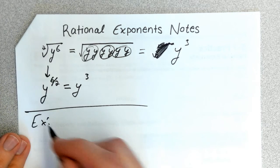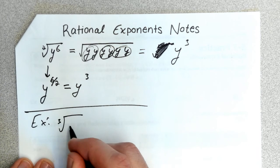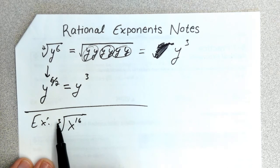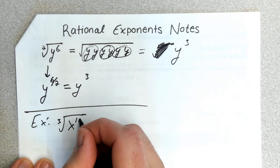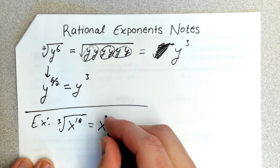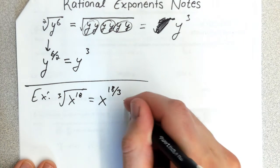For instance, if you had the cubed root of x^18, you could simplify this by taking x^(18/3), which equals x^6.